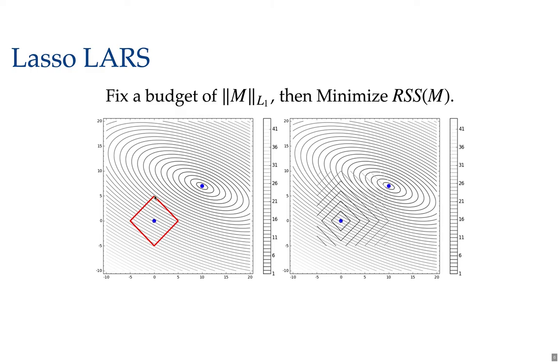Now to constrain the L1 norm means for example to stay within this red box. And you'd want to find the model that gets closest to the minimum of the residual sum of squares while staying inside the red box. In this case it looks like it's the upper corner of this box.